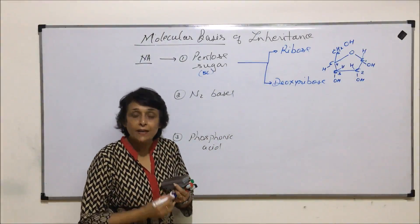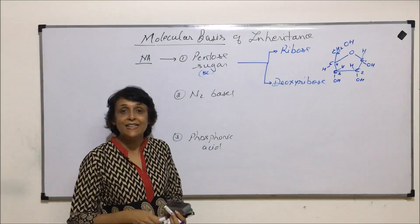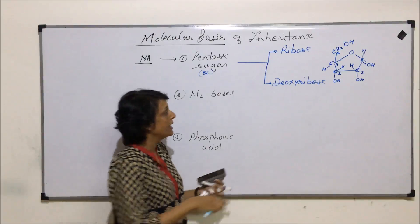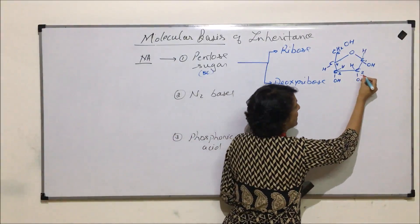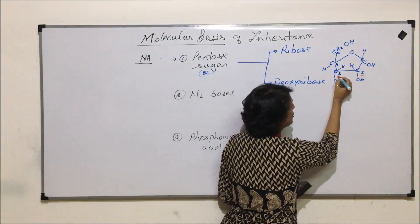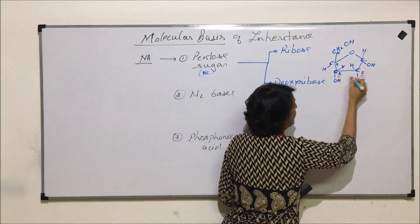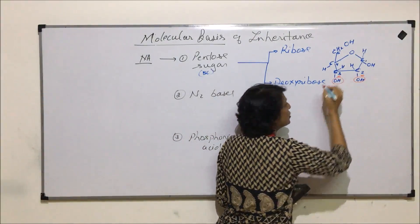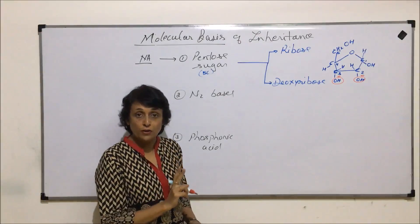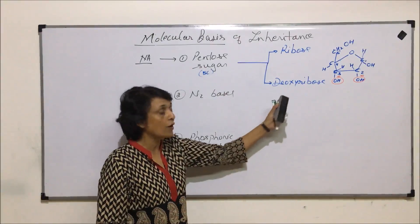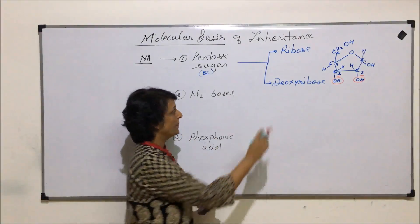The important thing that we have to remember, which we will need later on, is that on carbon number 2 and 3 there are functional groups, that is OH. There are two functional groups in case of ribose sugar.